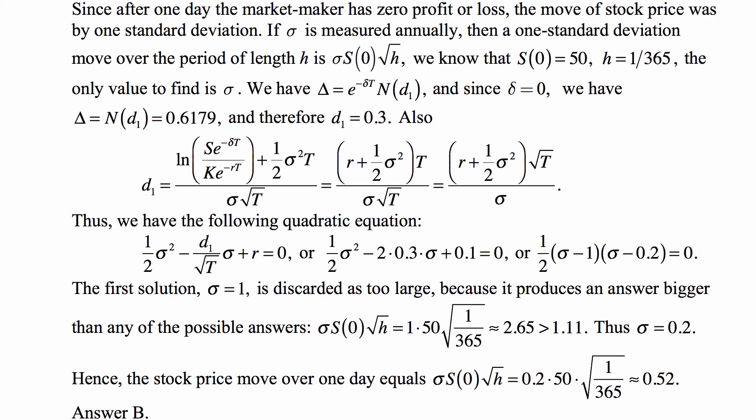Hence, the stock price move over one day equals σ times S(0) times the square root of h. So 0.2 times 50 times the square root of 1/365, and that's approximately 0.52, which is 0.5, and that's answer B.